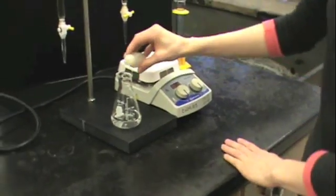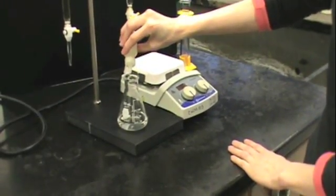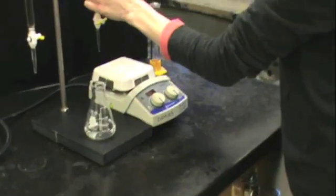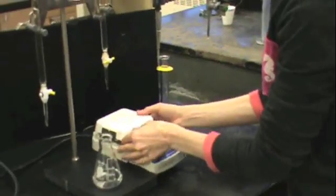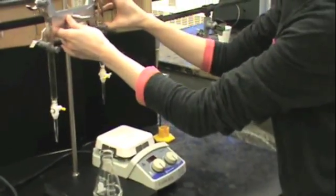Once you've obtained your unknown, add two drops of indicator, phenolphthalein in this case, and then you'll set up the titrant that you'll be using to titrate your unknown.